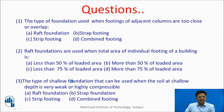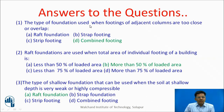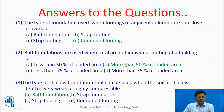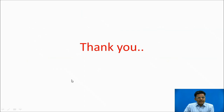Question 1: The type of foundation used when footings of adjacent columns are too close or overlap — options: raft, strap, strip. Answer is combined. Question 2: Raft foundations are used when total area of individual footings is more than 50 percent of the loaded area — answer is more than 50. Question 3: The type of shallow foundation used when soil at shallow depth is very weak or highly compressible — options: raft, strap, strip, combined. Answer is raft. These are the references. Thank you.